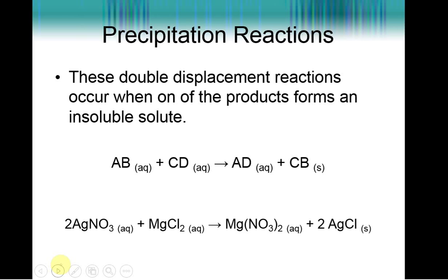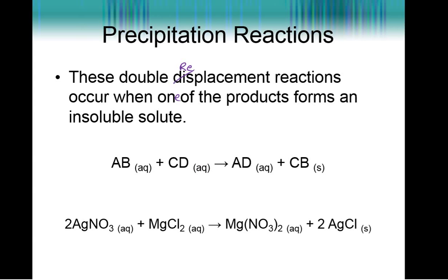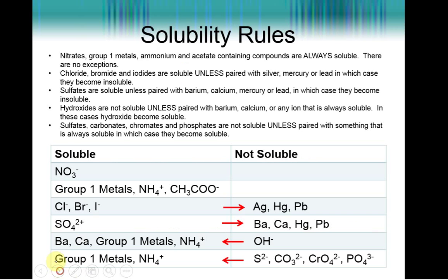Precipitation reactions are double replacement reactions that occur when one of the products forms an insoluble solute. For example: AB + CD → AD + CB, such as silver nitrate reacting with magnesium chloride to produce magnesium nitrate and silver chloride solid. The only way to figure out what your insoluble compound is is to memorize the solubility rules.